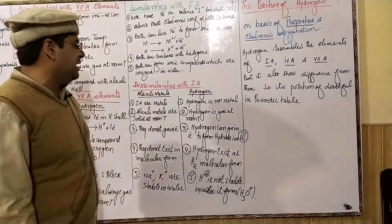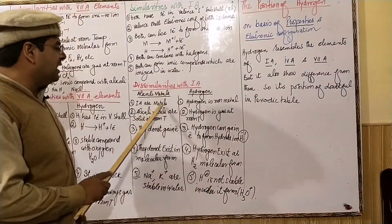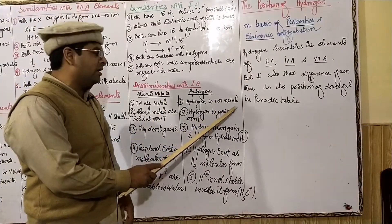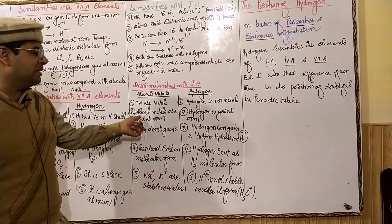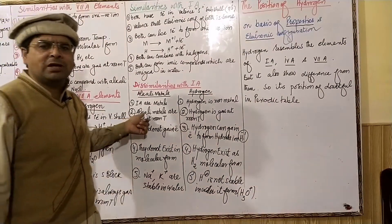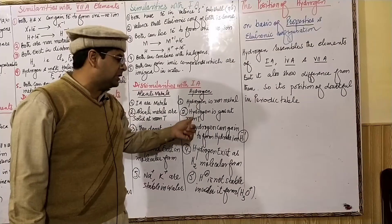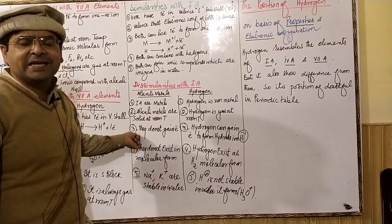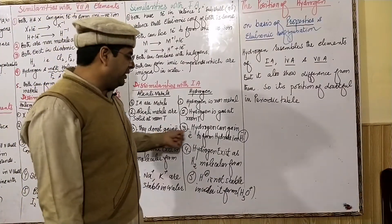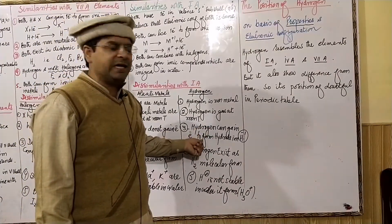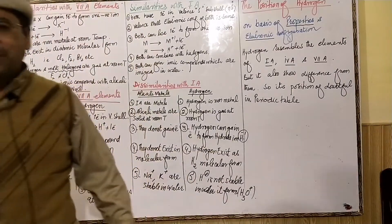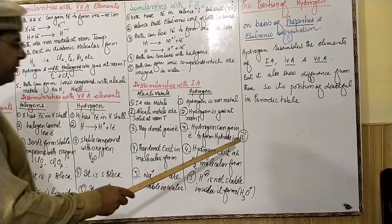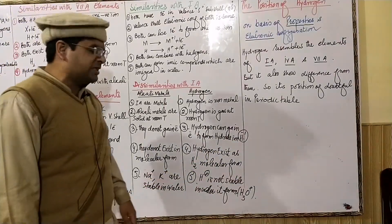The first difference: 1A elements are all metals, but hydrogen is a non-metal. 1A elements are solid at room temperature, while hydrogen is in gaseous form at room temperature. Alkali metals do not gain electrons — they lose them — whereas hydrogen has the ability to gain one electron and form a hydride ion (H⁻).